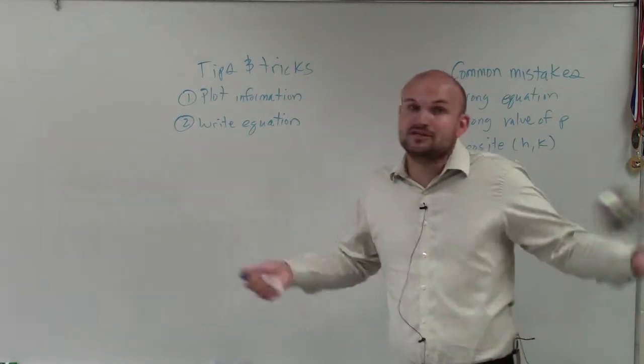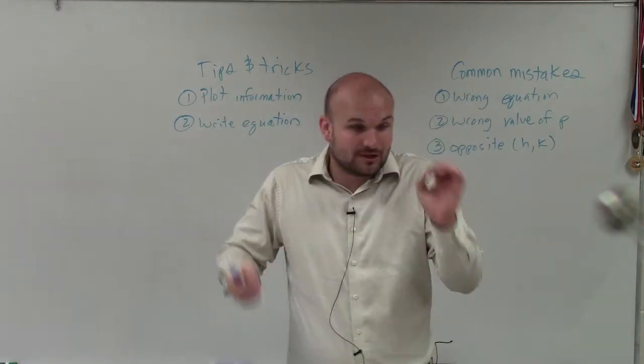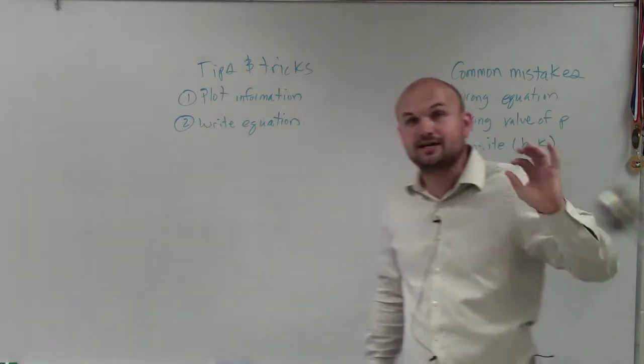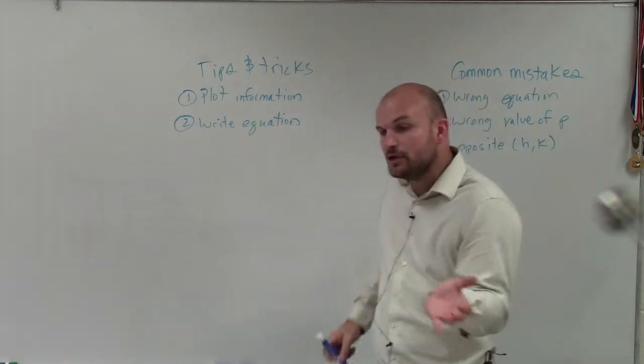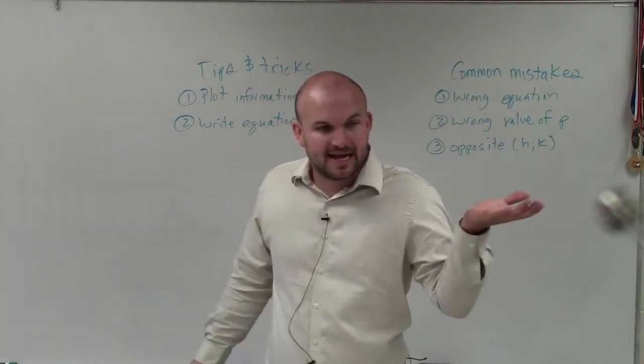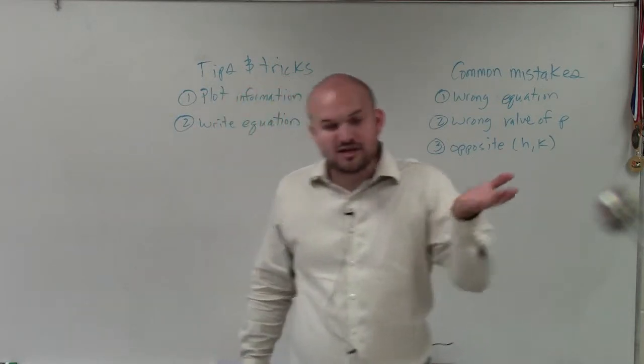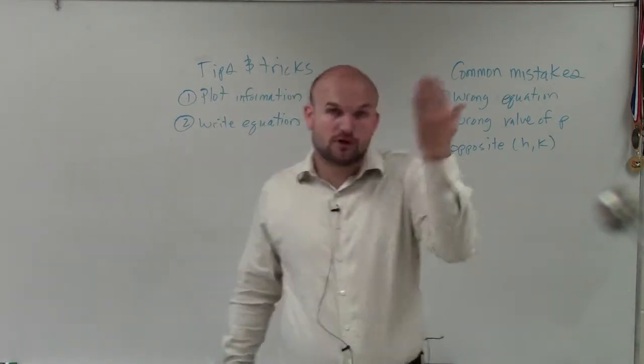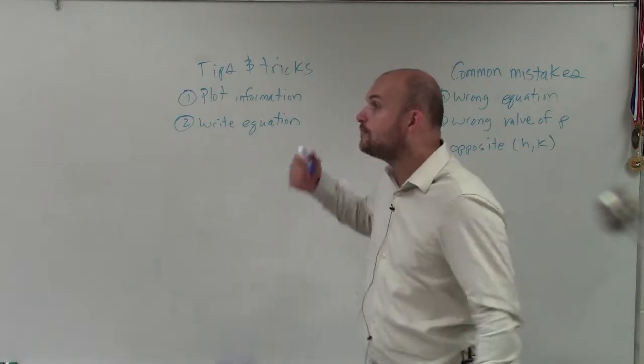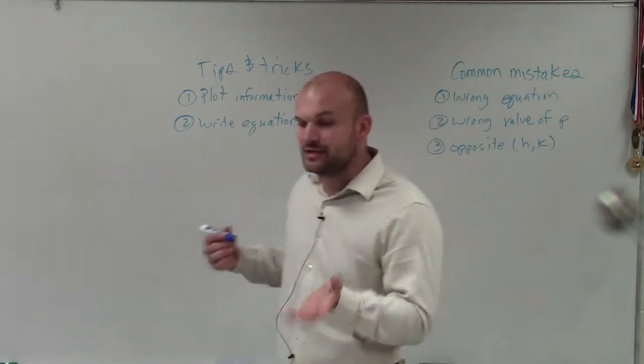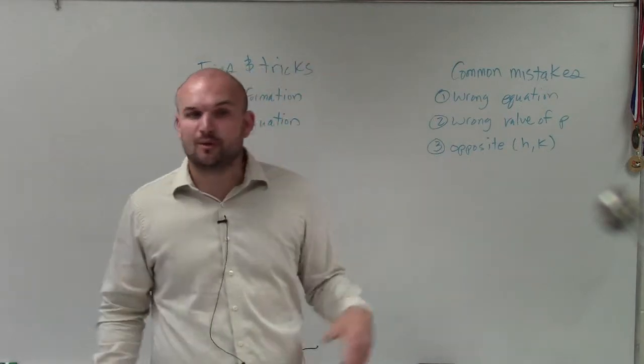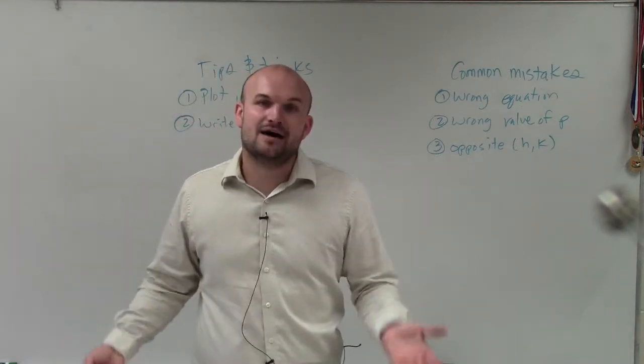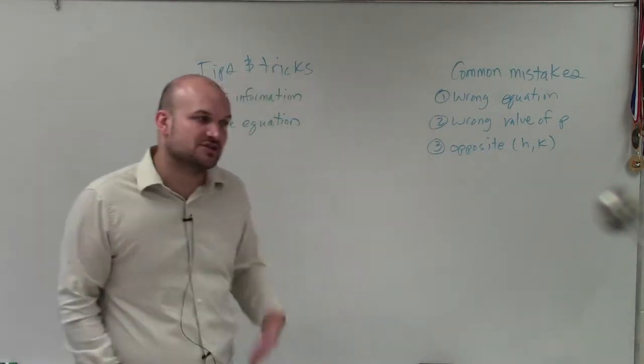So write the information. If it says here's the focus and here's the vertex, plot those points. Write a little dot for focus and the vertex on a graph. Write down that information. The next thing is, once you determine your equation - is it an equation with a horizontal axis of symmetry or a vertical axis of symmetry? Once you determine that, write down the equation on your sheet of paper because you're bound to forget it or confuse it with another equation when you actually start writing it down. So write down the equation so you can go off of it.